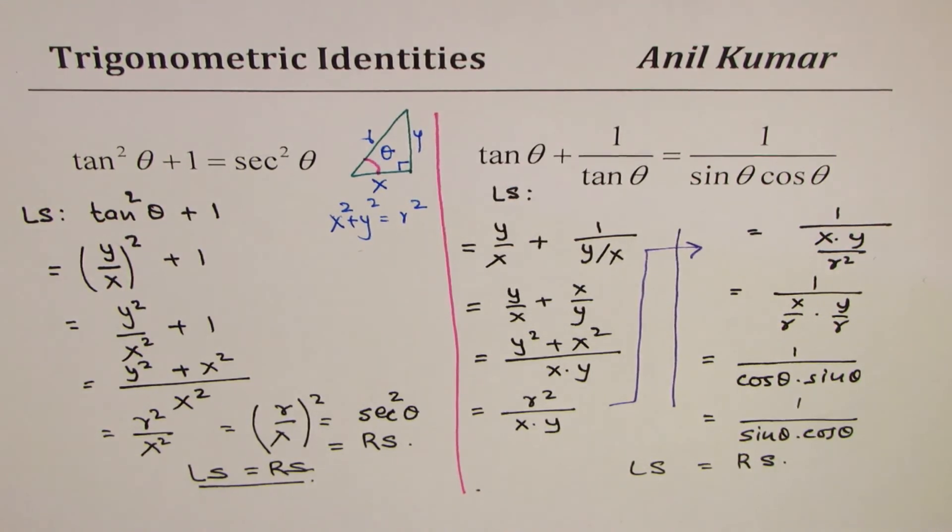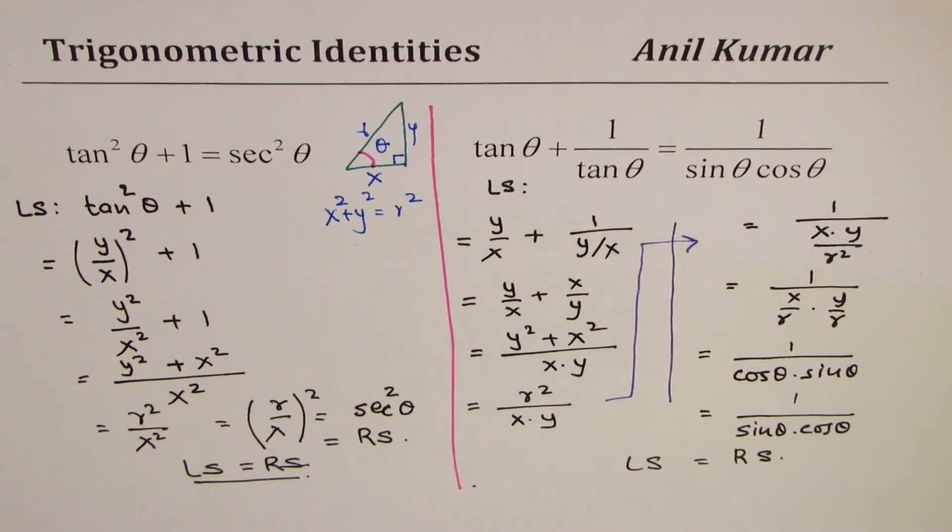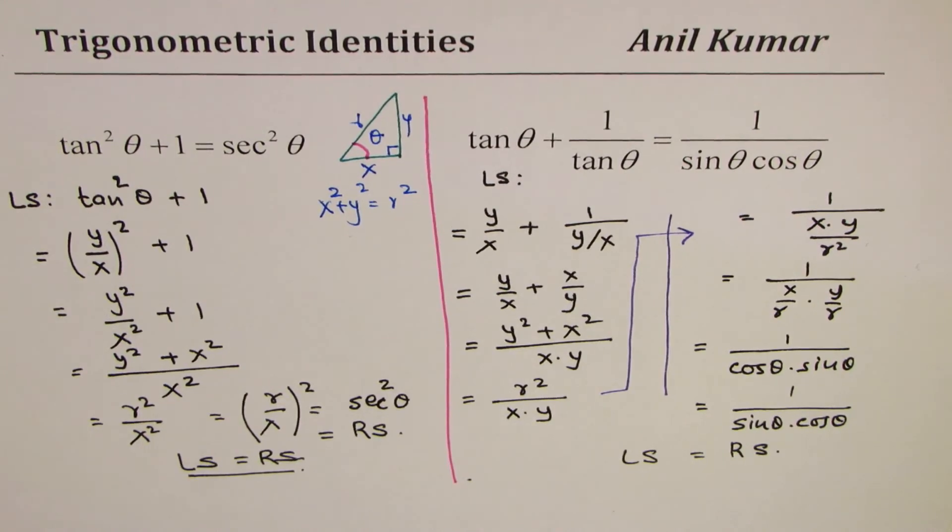However, I hope with this, you have understood the concept that the coordinate points can help us prove trigonometric identities. It's a very important method and can be adopted many times if you find it difficult to prove trigonometric identities. Feel free to share my videos, write your comments, and if you like and subscribe, that would be great. Thank you and all the best.